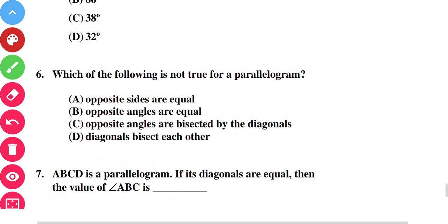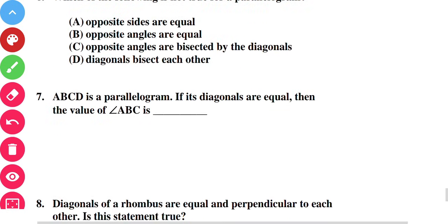Question number six: which of the following is not true of a parallelogram? Opposite sides are equal, opposite angles are equal — but 'opposite angles are bisected by the diagonals' is not true. Option C is correct. Next: if ABCD is a parallelogram and the diagonals are equal, then angle ABC = 90 degrees, making it a rectangle.